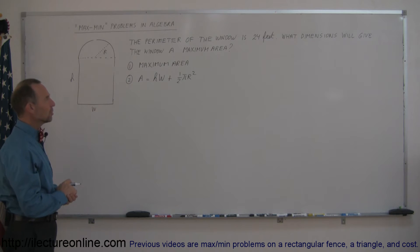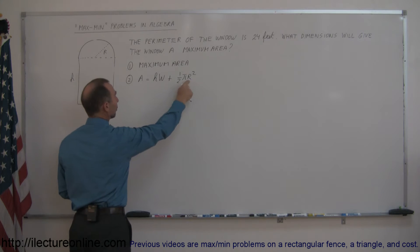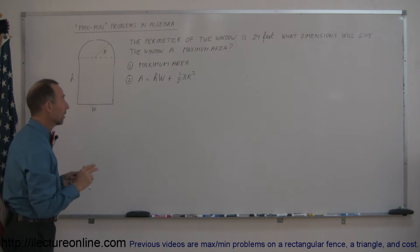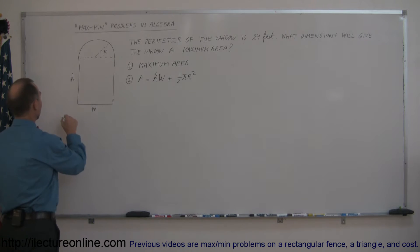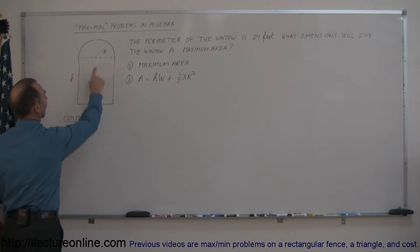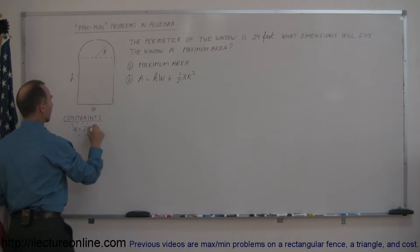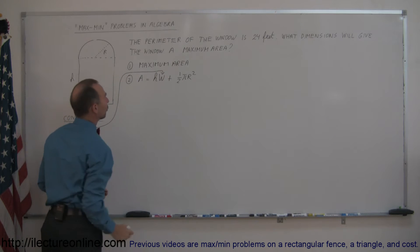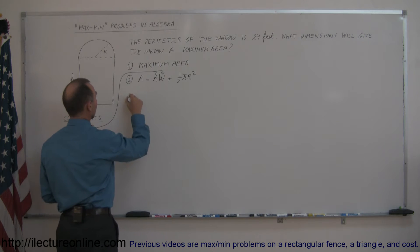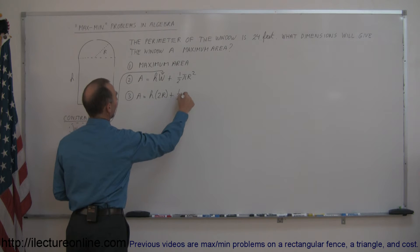The next thing we need to do is express the area in terms of only one variable. You can see there are three variables: height, width, and the radius of the semicircle. So we need to come up with two constraints that will eliminate two of those three variables. The first constraint is a relationship between the width and the radius — the width would be twice the radius. So width equals two times the radius. We plug that into our equation to get rid of W, and now the area equals H times 2R plus one-half πr².